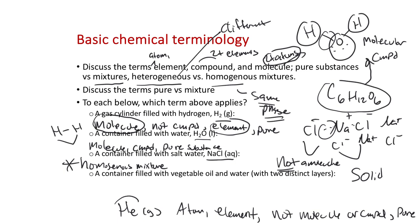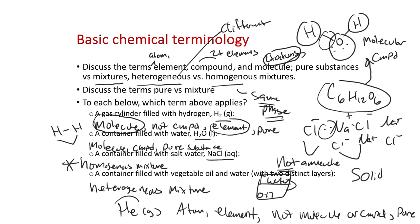If we had vegetable oil and water, they're not going to mix together. Salad dressings tend to settle — Italian dressing, for example. If you just had pure oil and pure water mixed together, they're not going to mix; you're going to get a heterogeneous mixture. Whichever is more dense would be on the bottom, whichever is less dense would be on top.